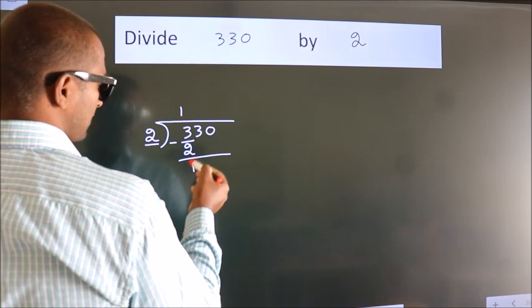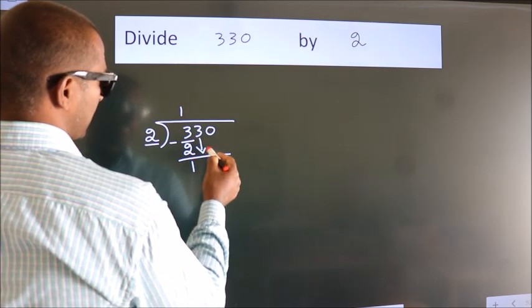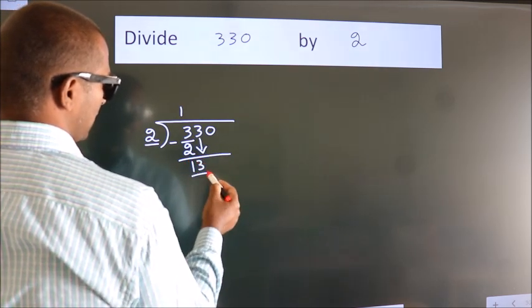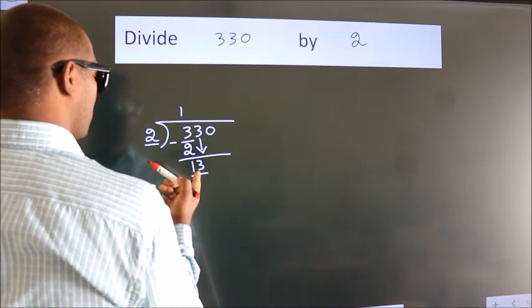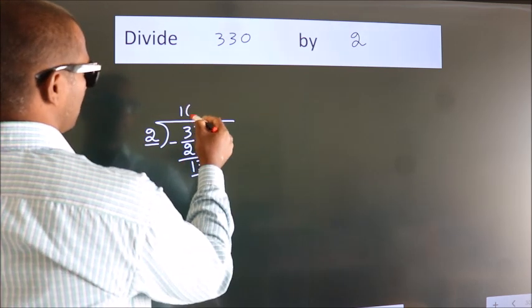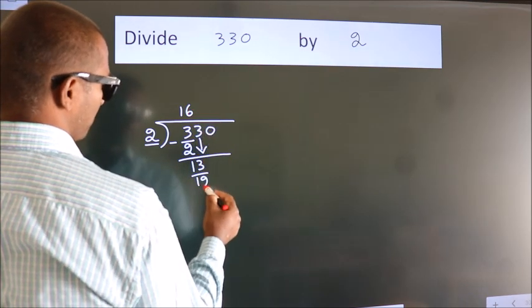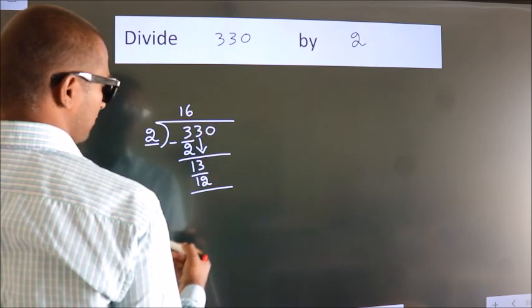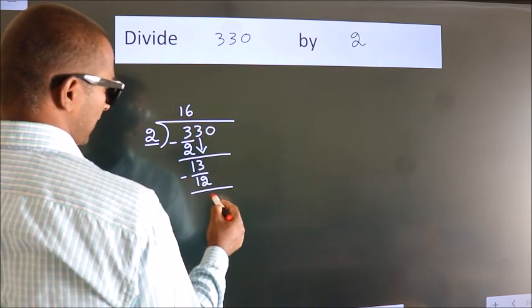After this, bring down the beside number. So, 3 down, making 13. A number close to 13 in 2 table is 2 times 6 is 12. Now, we subtract. We get 1.